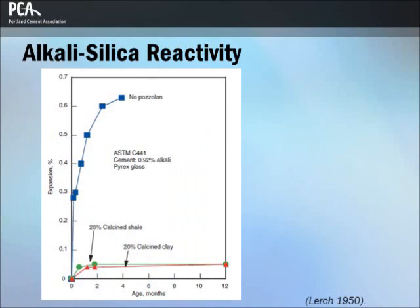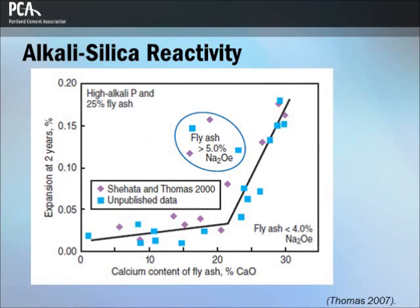This figure shows the reduction of alkali-silica reactivity by calcined clay and calcined shale. Fly ashes with CaO contents below about 20% are generally effective in reducing expansion in ASTM C1293 concrete prisms made with a reactive aggregate at 25% replacement rate. However, some fly ashes with a high alkali content are not. Without fly ash, this aggregate expanded about 0.25% at 2 years.